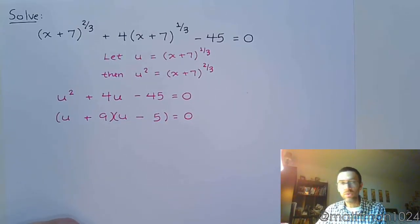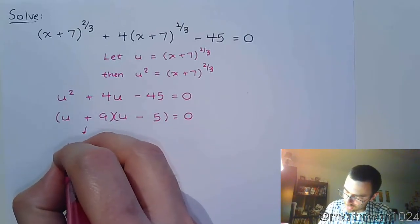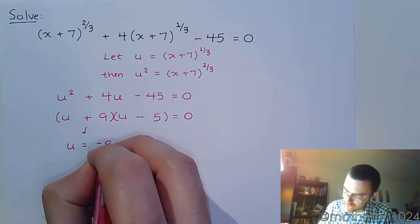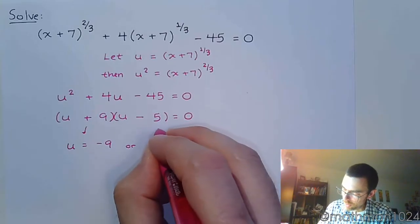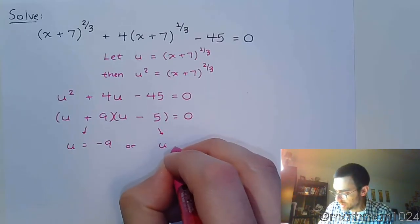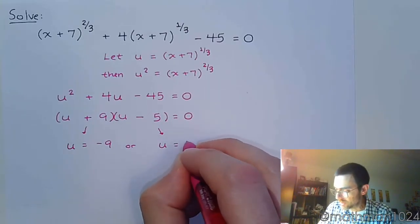And by using the zero factor theorem, we can say that u is equal to negative 9 or u equals positive 5.